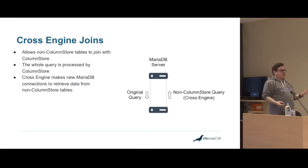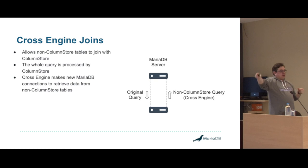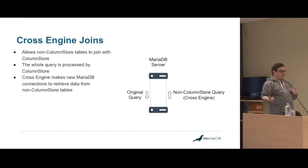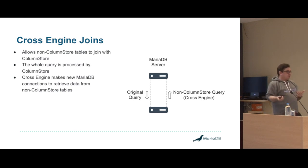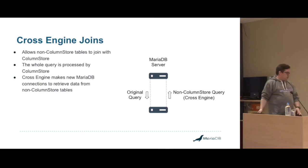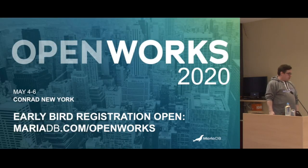Basically, every function MariaDB has we have to re-implement, because they have to execute on the PM nodes. If there's a function we haven't re-implemented, like some of the JSON functions, you would get an error. That's everything — thank you very much.